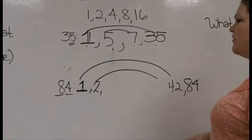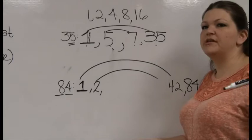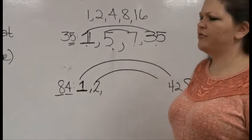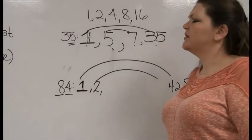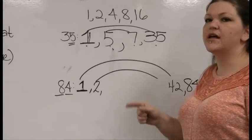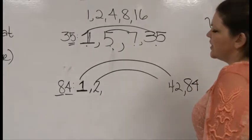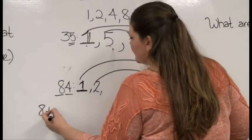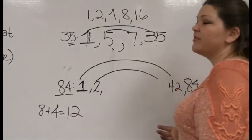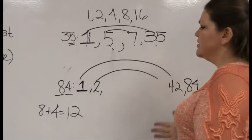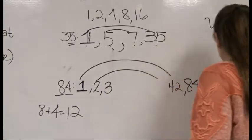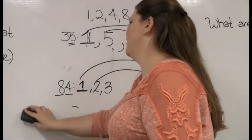Does 84 divide by 3? Here's where my A students and B students get separated. Half of you are going to tell me no, there's no 3 in there — but that is not the rule for 3's. The rule is the sum-of-digits trick. 8 plus 4 is 12. Does 12 divide by 3? Yes! So if the sum of digits divides by 3, so does the number.